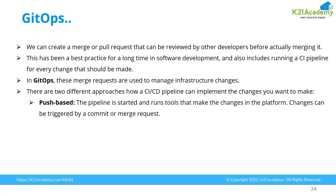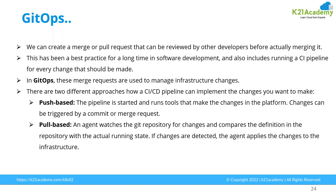The second approach is the pull-based approach. An agent watches the Git repository for changes. Whenever you make any changes, the agent keeps watching, and as soon as it identifies a new version of code, it immediately pulls the code from the repository and deploys the new version of the application using the CI/CD process. So to summarize: in the push-based approach, Git pushes the code to the underlying CI/CD pipeline. In the pull-based approach, an agent constantly monitors the application code in the Git repository, and whenever there is a change, the code is deployed on the platform.